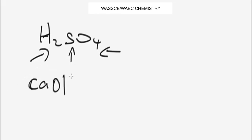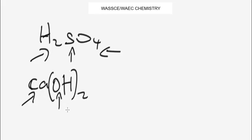Note that there may be brackets in a formula. For example, calcium hydroxide — Ca(OH)₂. The number outside the bracket applies to everything inside the bracket. So we have one atom of calcium, two atoms of oxygen, and two atoms of hydrogen.